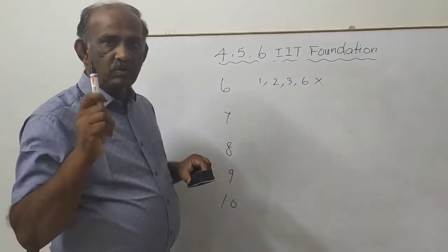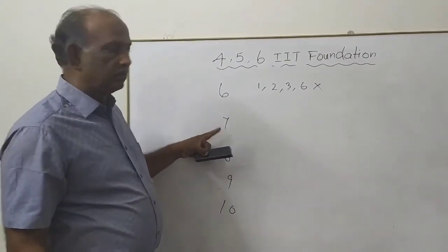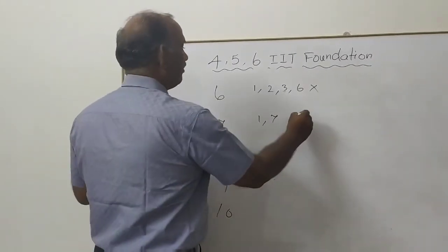Prime number has got only 2 divisors, 1 and itself. 7 also. Only 1 divisor, 1 is a divisor, 7 is a divisor, prime number.